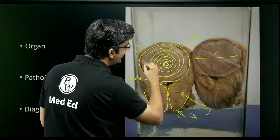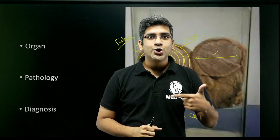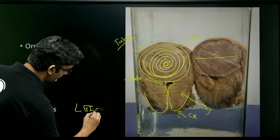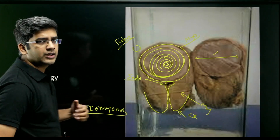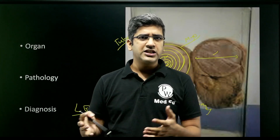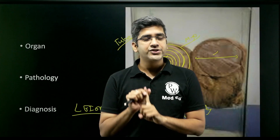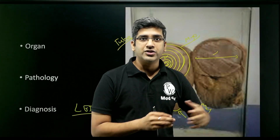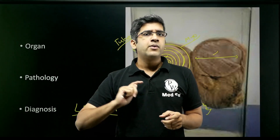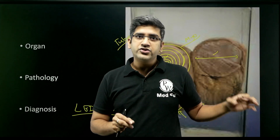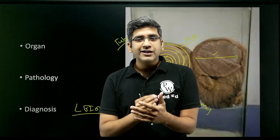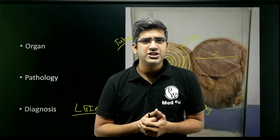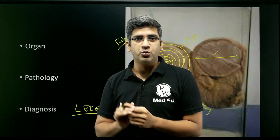This structure has a whorled appearance — that word is very important because it leads directly to the diagnosis. A solid, whorled-appearance structure in the myometrium of a uterus: the answer is leiomyoma, or fibroid uterus. Leiomyoma is the commonest benign tumor of the uterus. It can be intramural, submucosal, or subserosal. Microscopically it shows a classical whorled appearance; immunohistochemistry shows SMA (smooth muscle antigen) positivity.